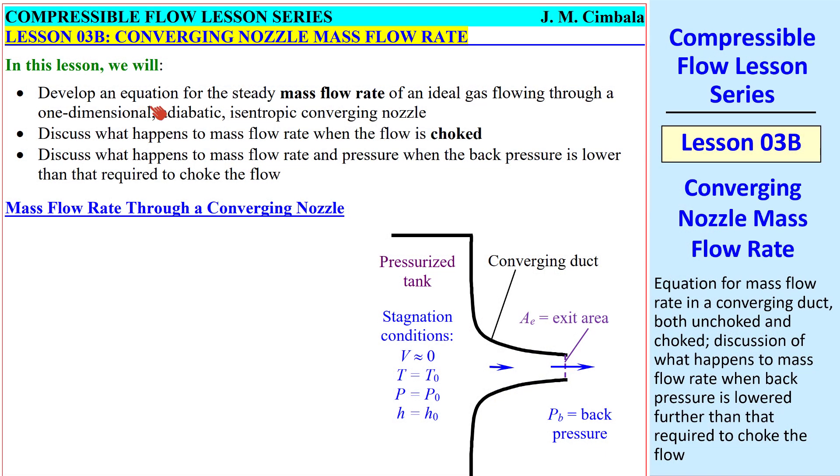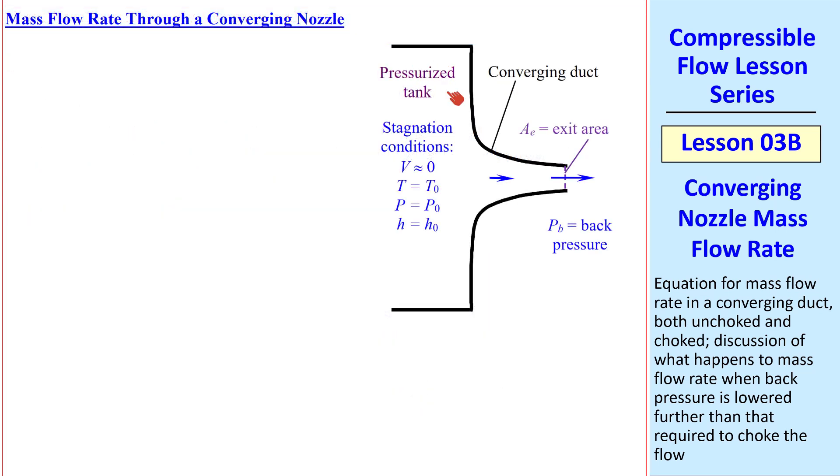In this lesson, we'll develop an equation for the steady mass flow rate of an ideal gas flowing through a 1D adiabatic isentropic converging nozzle. We'll also discuss what happens to the mass flow rate when the flow is choked, and then what happens to it when the back pressure is lower than what is required to choke the flow.